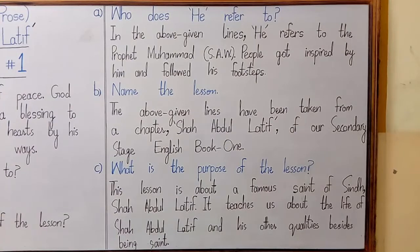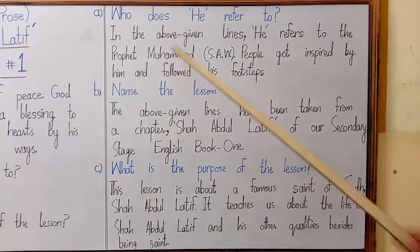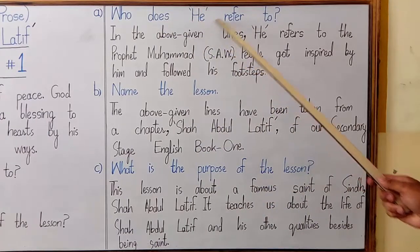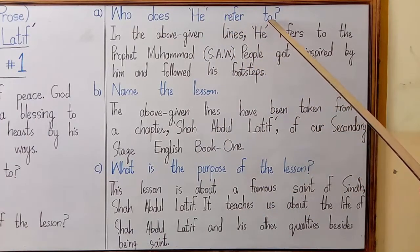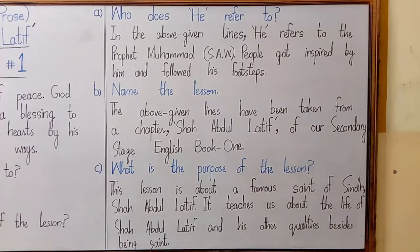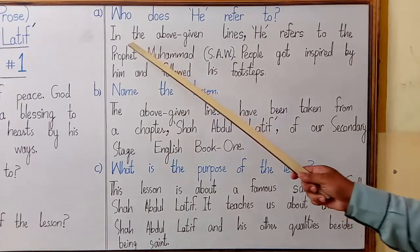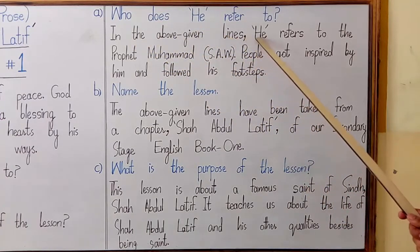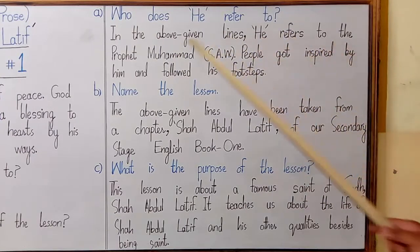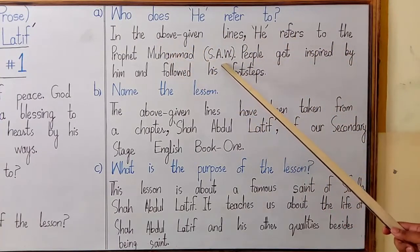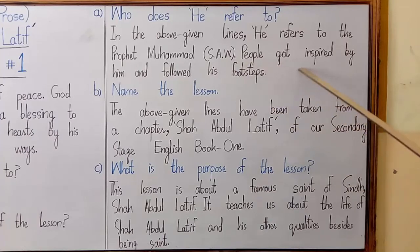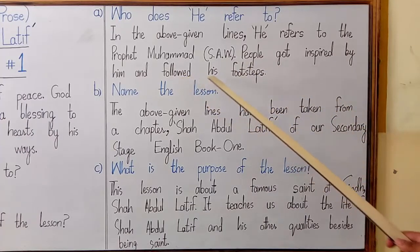So you see here there are 3 questions answered on the board. Question 1 — Who does 'he' refer to? In the context there is a usage of 'he' as a pronoun. We have to answer in detail who this 'he' refers to. The answer is: in the above given lines, 'he' refers to the Prophet Muhammad; people got inspired by him and followed his footsteps.